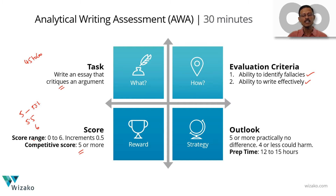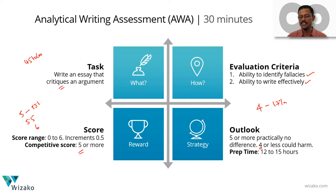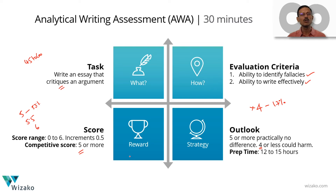Keep this perspective in mind: if you do not get a 5 — if you get a 4 or less — it could actually harm your possibility of getting an admit. A score of 4 translates to the 17th percentile, essentially placing you in the bottom 20 percentile in your ability to critique an argument in structured written form. So don't fall into this category. A score of 5 or more is good. Roughly 12 to 15 hours of preparation should get you there.